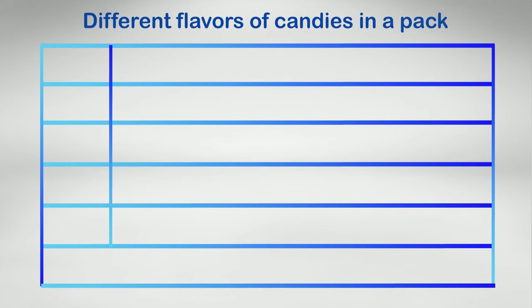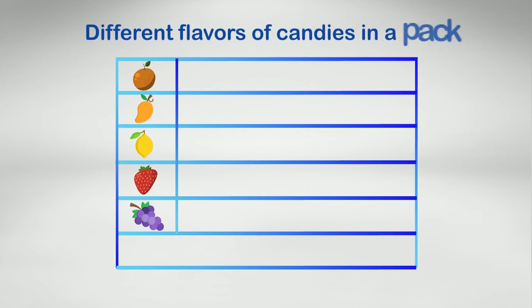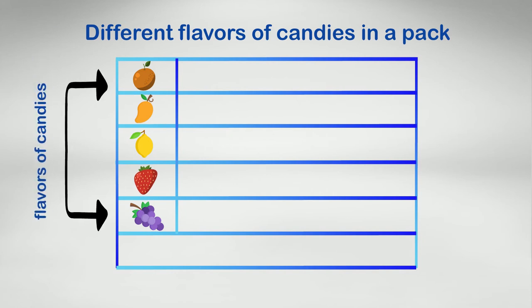Let's do another example. Different flavors of candies in a pack: orange, mango, lemon, strawberry, grapes. Key: one smiley is equal to five candies. The first row of the chart tells us the title of the information presented in the chart. In the left column we have different flavors of candies. In the right column we have pictures in the form of small smiley faces which represent the number of candies.